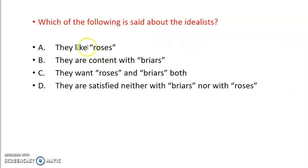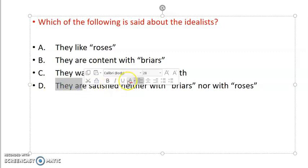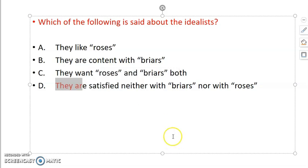Which of the following is said about idealists? They like roses, they are content with briars, they want rose and briars both, or they are satisfied neither with briars nor with roses? So answer is option D. They said they are not attached to physical things, physical world. Their belief was idea, thought - these are most important. Objects that we see in reality, more important than that is our idea, our thought. So they don't care about roses or briars. Material things, they don't care about.